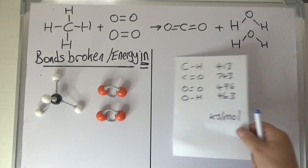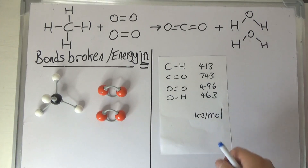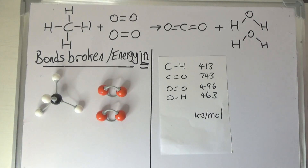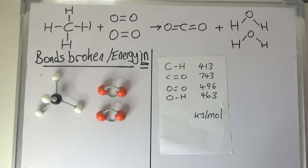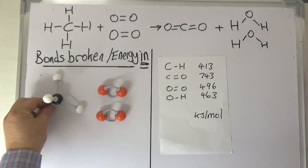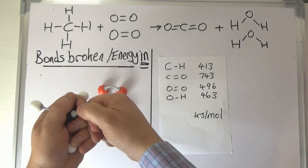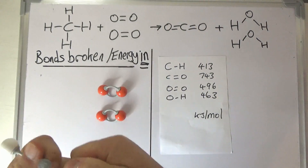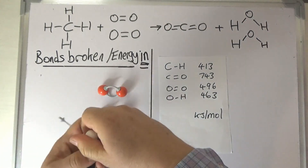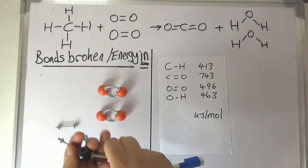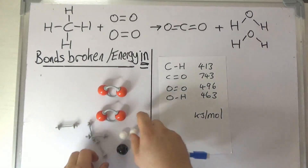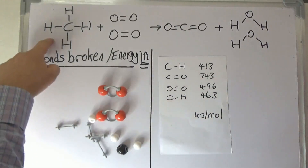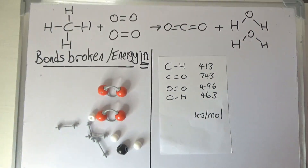In the exam question you're always given a table of bond energies, and these can vary slightly from question to question but they're always in kilojoules per mole. So let's start by breaking up this CH4 molecule — when we do that we need to put energy in. The first thing we need to work out is: how much energy do I need to put in to break apart that molecule?